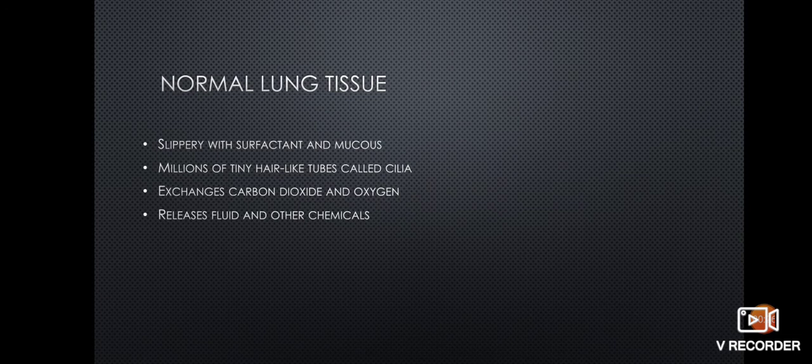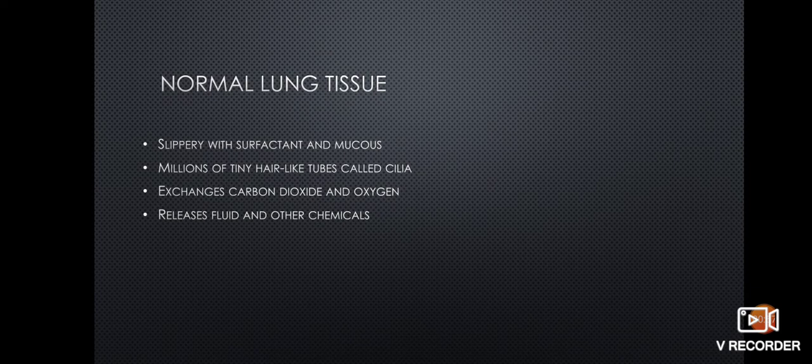In normal lung tissue, surfactant allows alveoli to remain open by reducing surface tension. This keeps the alveoli from sticking together and causing atelectasis and pneumonia. Surfactant provides alveolar stability, decreases opening pressure, and increases lung compliance by reducing surface tension. It promotes greater alveolar surface area leading to improved access to capillary beds for gas exchange, and it improves alveolar fluid clearance. The movement of fluids is encouraged by the movement of the cilia.